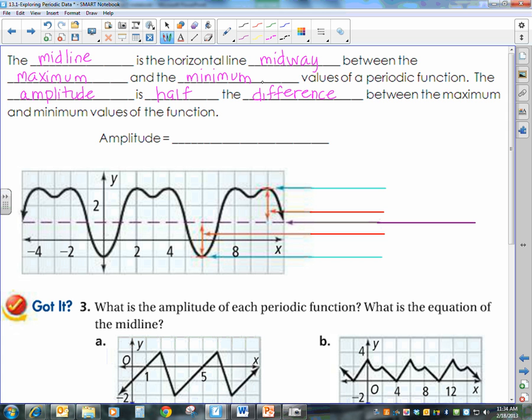And the amplitude of a function is half the difference between the maximum and minimum values of the function. So simplified, or in mathematical terms, amplitude equals one-half max minus the min. Sometimes I refer to that as max minus the min over 2. Same thing.